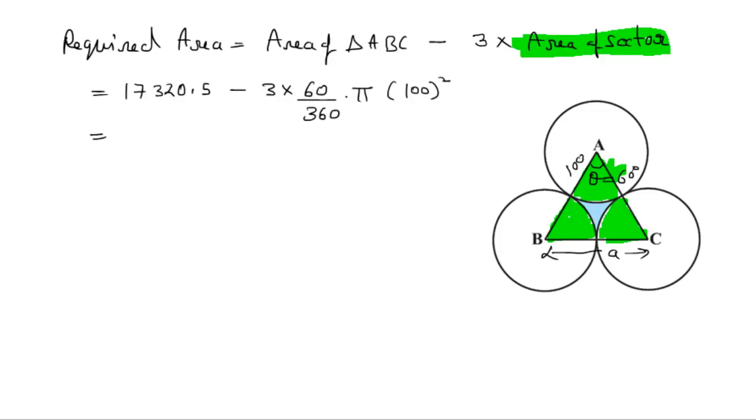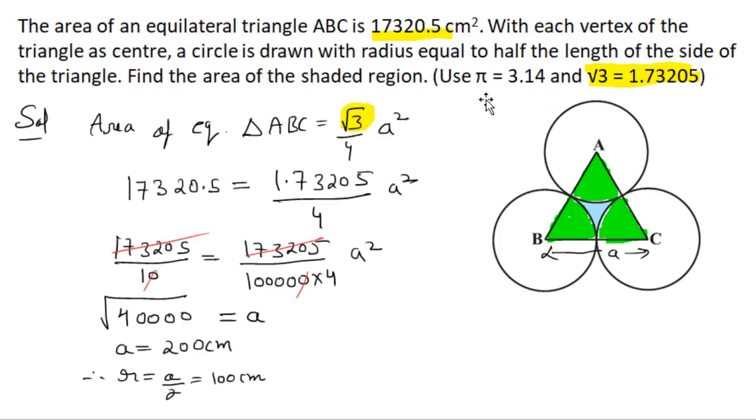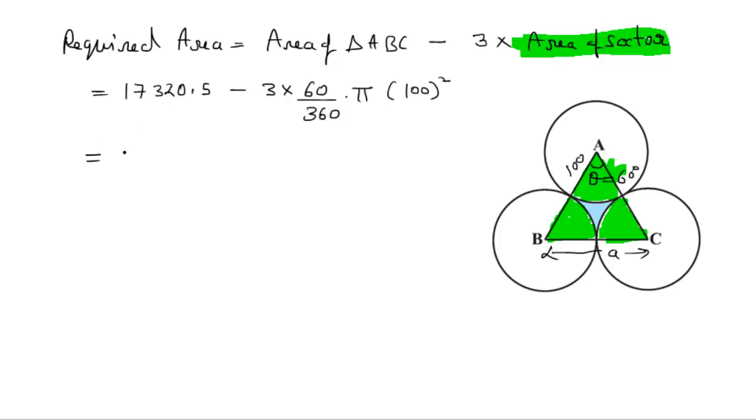The value of pi is 3.14. So we have: 17320.5 upon 10, and here this cuts. This becomes 1 over 2 multiplied by 3.14 multiplied by 100 multiplied by 100, because it was squared.